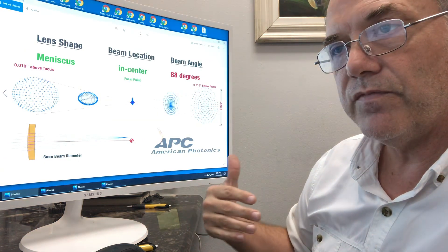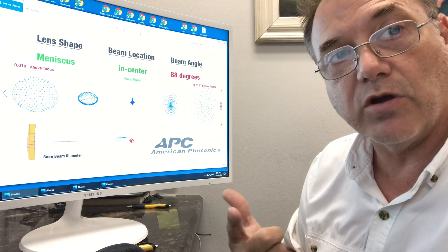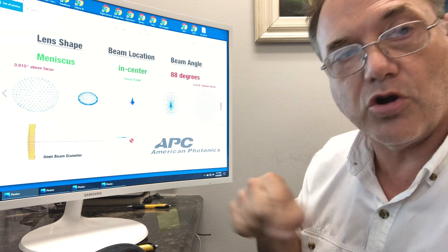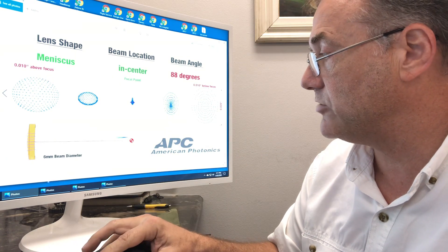So having less than perfect beam alignment is where I see most of the problems with smoke, with burning, with charring around the edges. So beam alignment is extremely important.